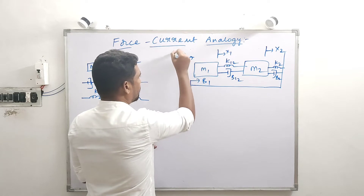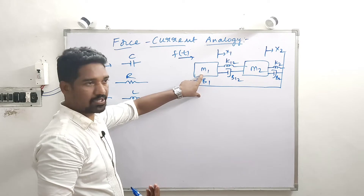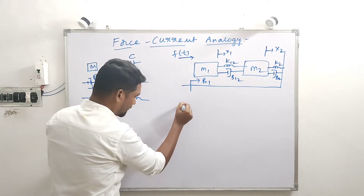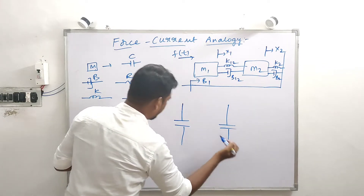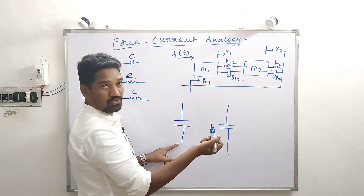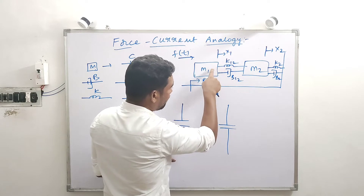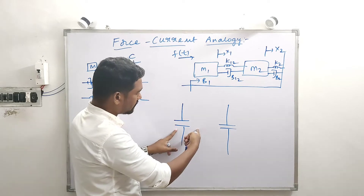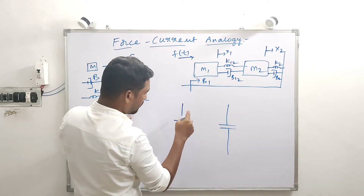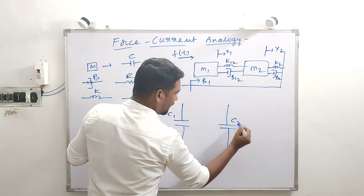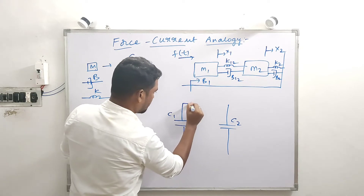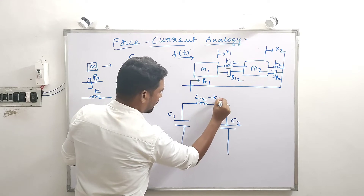The key word here is: what mass is there? Mass is equivalent to capacitor. In this picture, M1 and M2 are the masses. So in the electrical analogy, C1 indicates M1 and C2 indicates M2. K12 is between M1 and M2 — since K is equivalent to inductor L, we have L12 for K12.